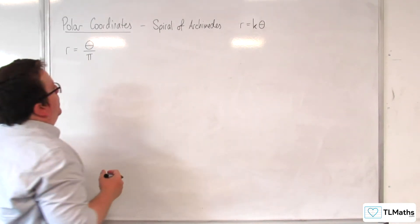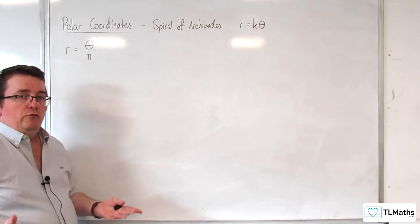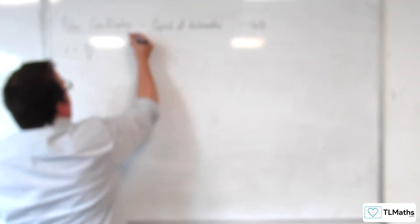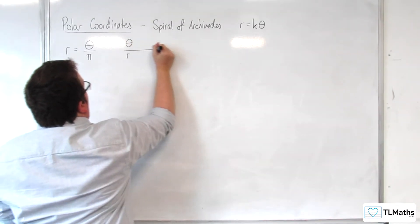So, what we're going to do is we're just going to build up a table of results. So, if we have our values of theta and values of r.